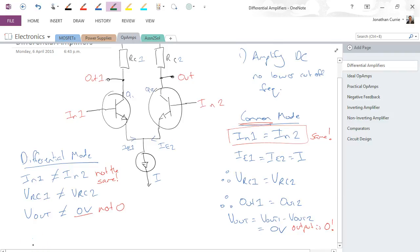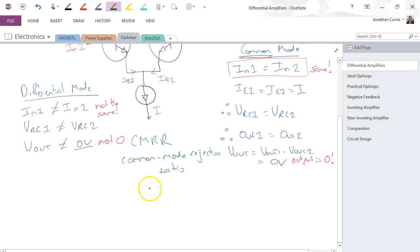In fact, one of the ways that we can describe how well this circuit amplifies differentially versus how it would operate or amplify in a common sense is the CMRR or the Common Mode Rejection Ratio. Simply put, the CMRR is equal to the differential mode gain versus the common mode gain, so it's just the ratio between them.